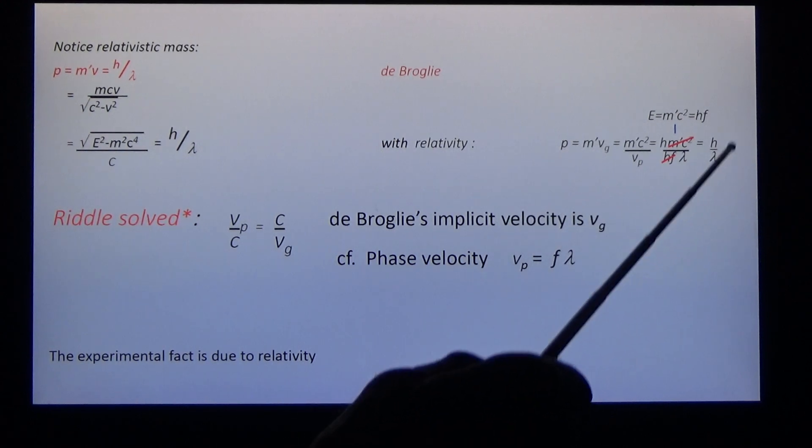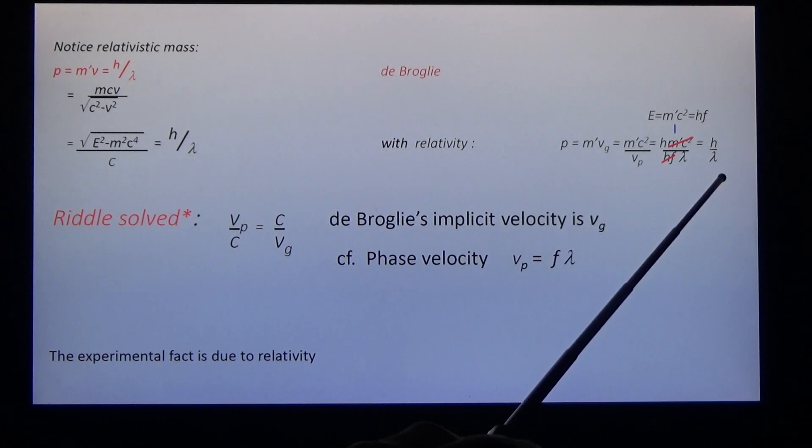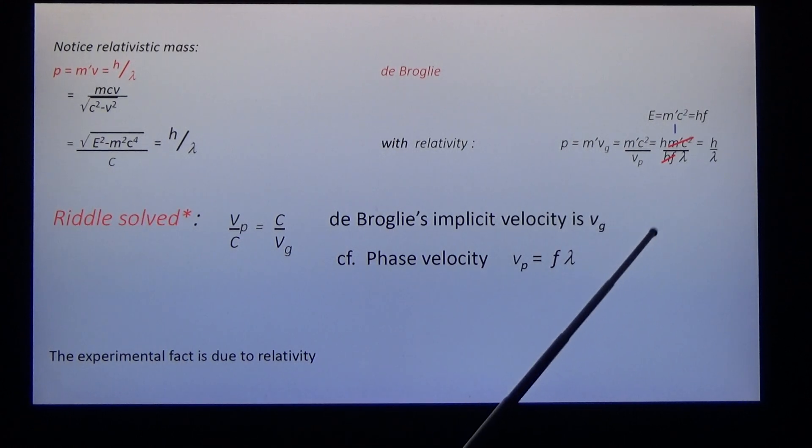And with a little bit of cancellation, we find that the momentum is equal to h over lambda, as de Broglie had it. This is no longer a hypothesis. This is obvious theory. The experimental fact is due to relativity, twice over.